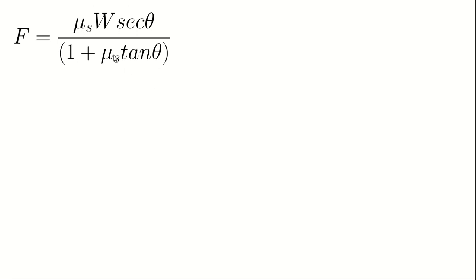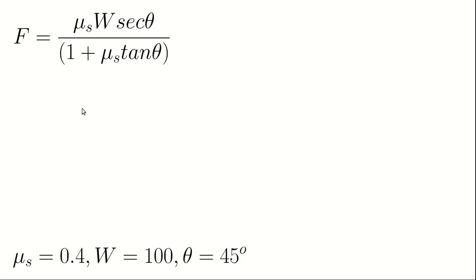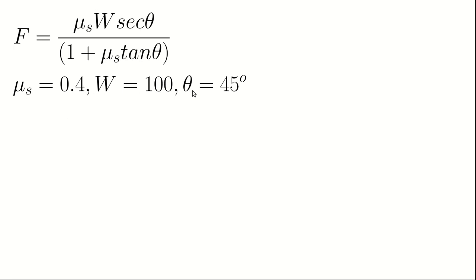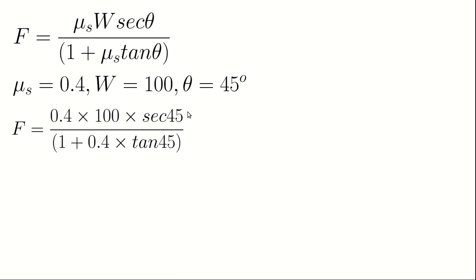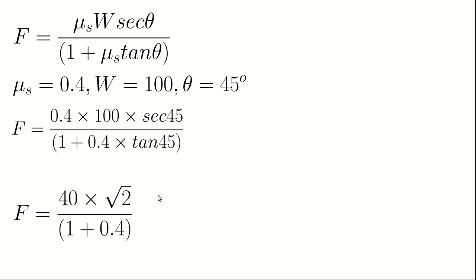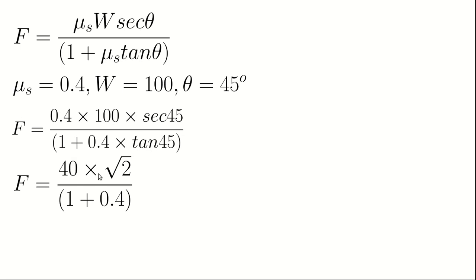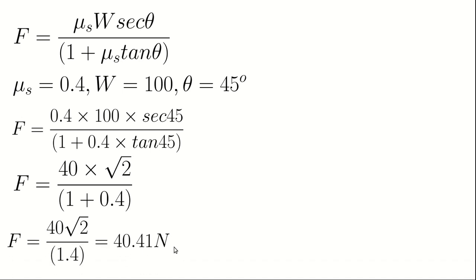This is the force needed to set the block in motion. Substituting the given values — μs = 0.4, W = 100 N, θ = 45° — we get: F = 0.4 × 100 × sec45° divided by (1 + 0.4 × tan45°). Since tan45° = 1 and sec45° = √2, this gives F = 40√2 divided by 1.4, resulting in F ≈ 40.41 N.